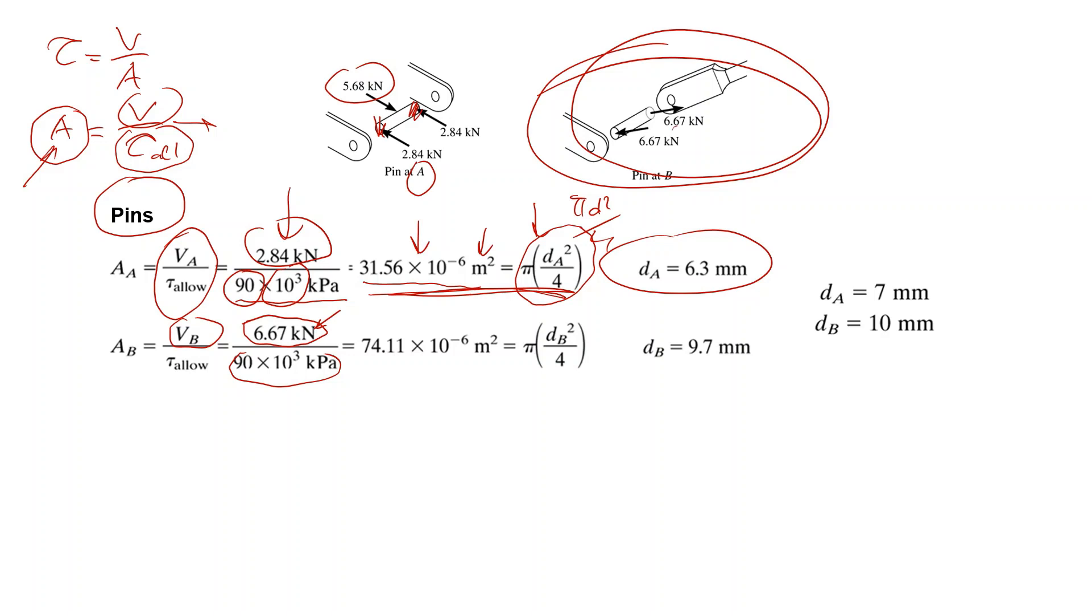So we directly take 6.67 kN and find the area. This should be equal to πd²/4. Here the pin should be 9.7 millimeter diameter. Since we are going to buy these pins, we take to the next millimeter level. For A, 7 millimeter pin; for B, 10 millimeter pin will be necessary.